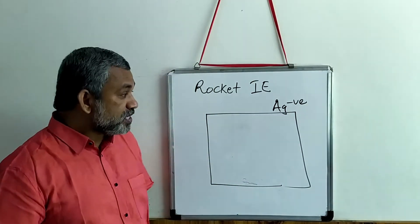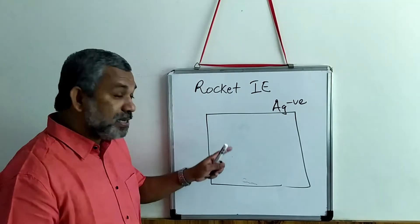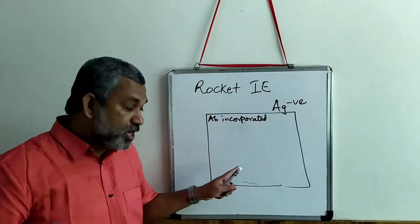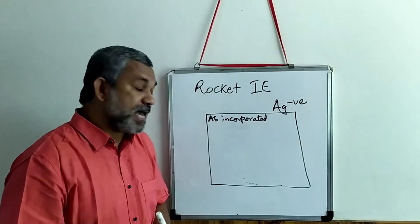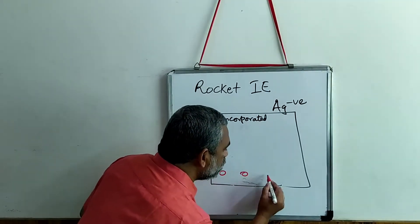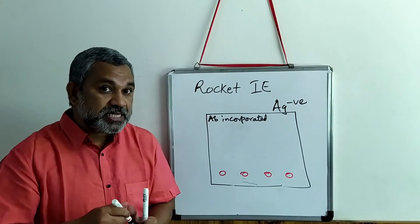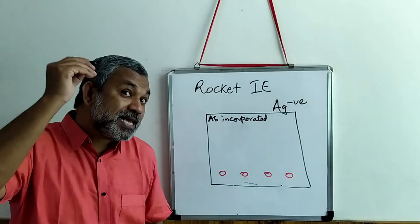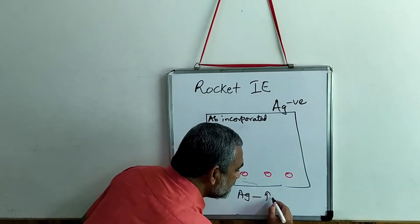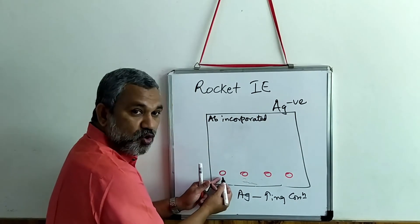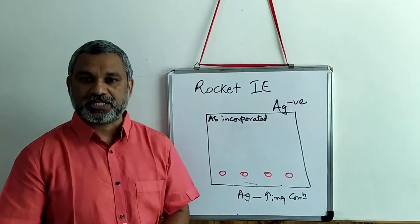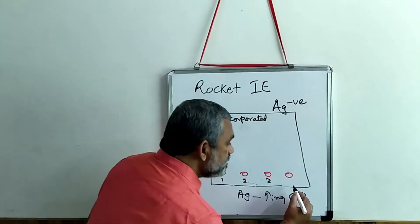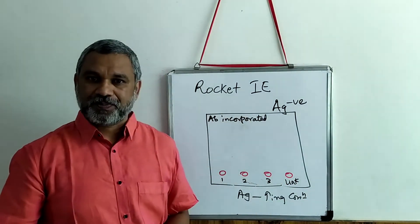To carry out rocket immunoelectrophoresis, take a glass plate, melt agarose, add antibody, and pour it. Once the antibody-incorporated agarose solidifies, create wells — one, two, three, and four. In these wells, add negatively charged antigen in increasing concentration: wells one, two, and three receive known concentrations, and well four receives an unknown concentration.